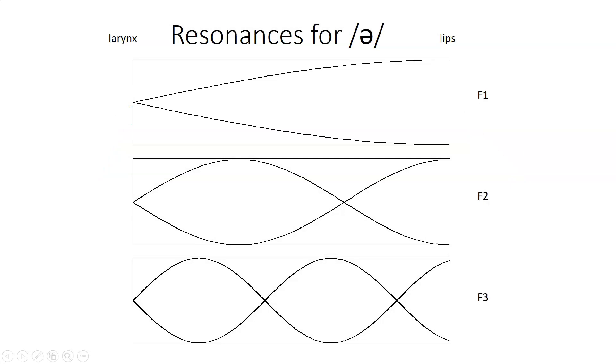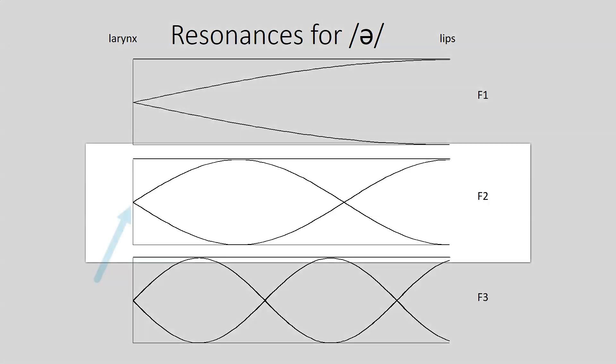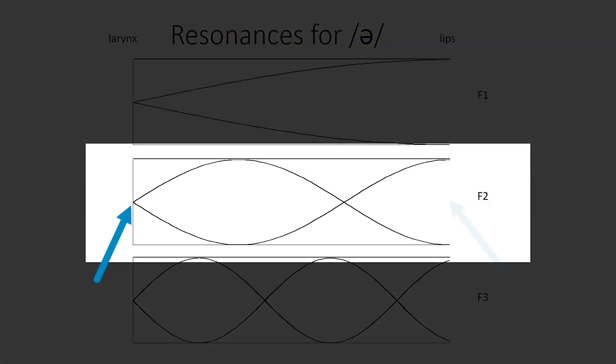The second formant is the next odd multiple, so three times that first formant. That would be the next standing wave, where again there's a node at the closed larynx end, and an anti-node at the open lips end.